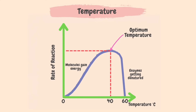Enzyme activity is therefore low at low temperatures. It is important to note that low temperatures do not denature enzymes. The rate of reaction increases as temperature increases, and for this enzyme, it reaches its highest at an optimum temperature of 40 degrees Celsius. Beyond this temperature, the rate of reaction decreases again because the enzyme becomes denatured and can no longer function as a biological catalyst. Most enzymes have an optimum temperature of approximately 37 degrees Celsius in the human body and start getting denatured above 50 degrees Celsius.